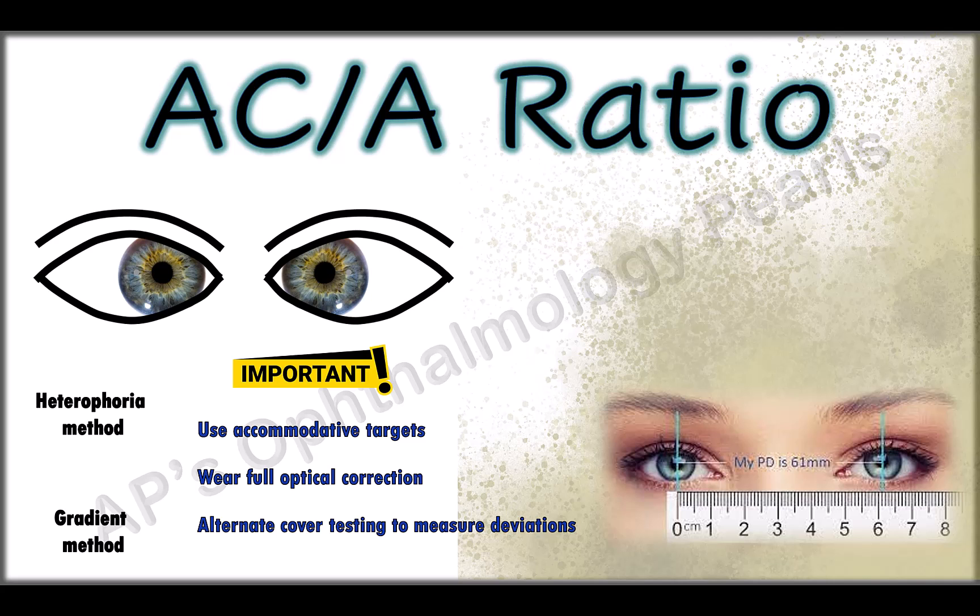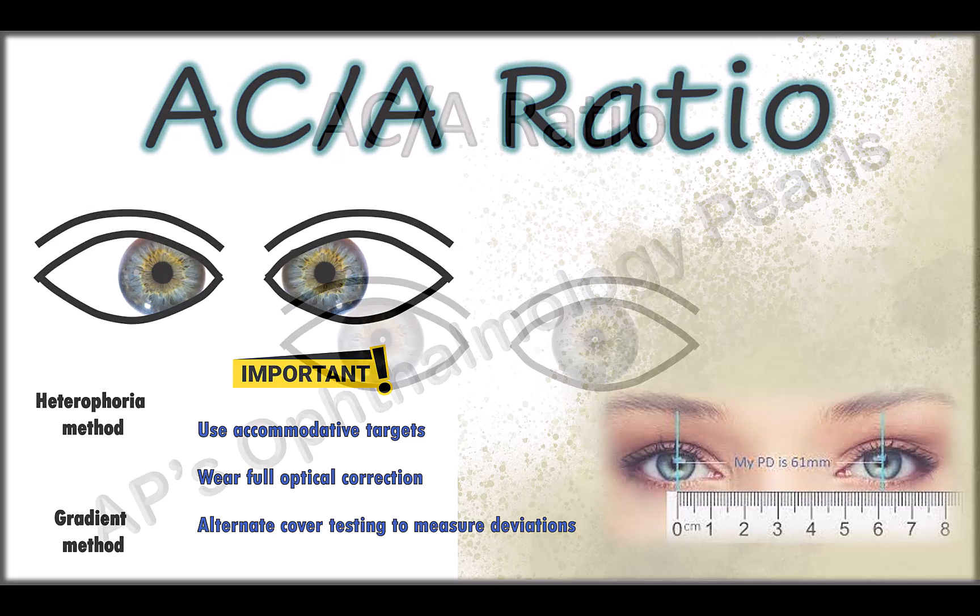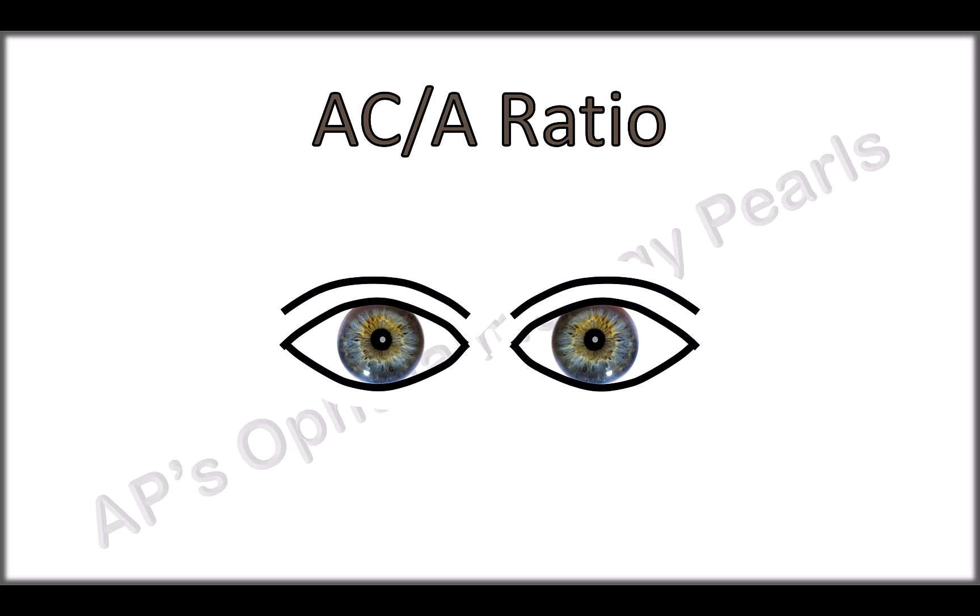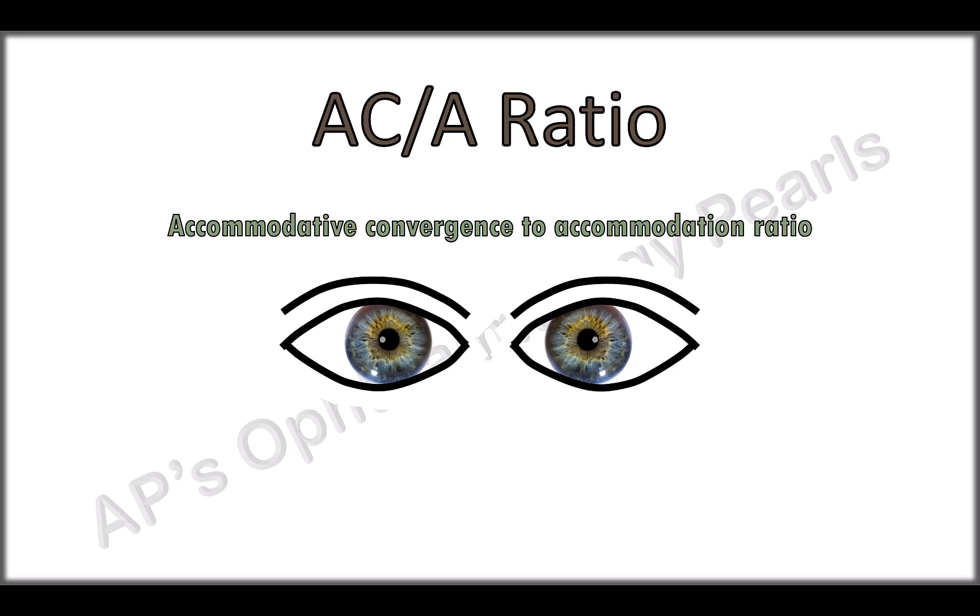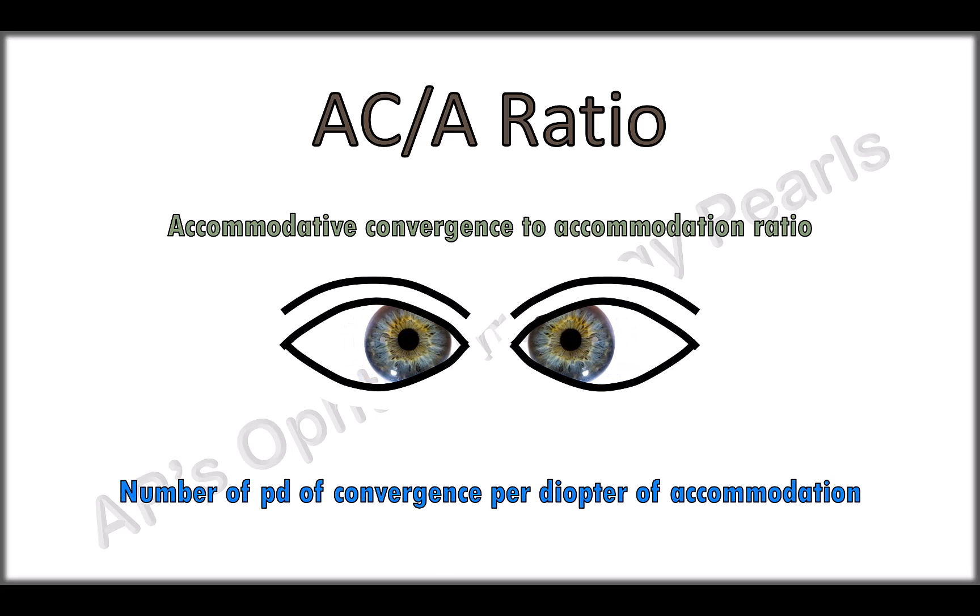Today we shall discuss the practical aspects of determination of the AC/A ratio. The AC/A ratio is the accommodative convergence to accommodation ratio and is the number of prism diopters of convergence per diopter of accommodation. Its unit is prism diopters per diopter.